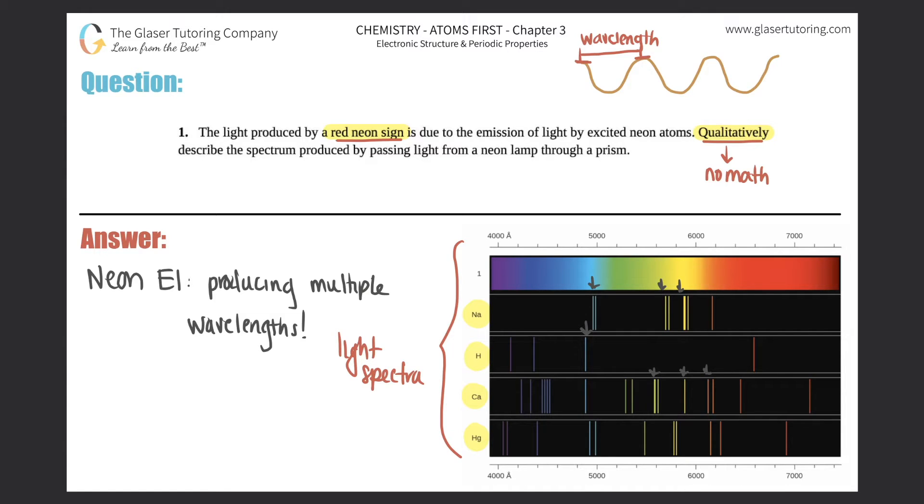And that's what these are representing. These lines are representing the different wavelengths, which represent different colors. The higher the wavelength is, the more spread out the wave is. So if you have a larger number, 7,000, that means that your waves are going to be much farther apart.